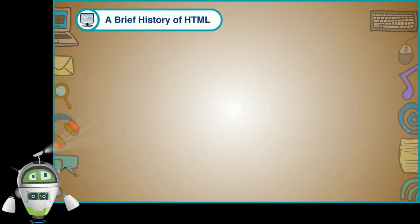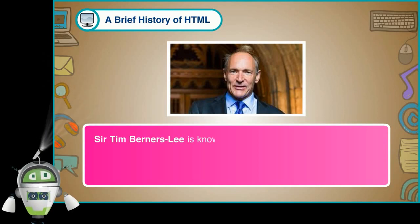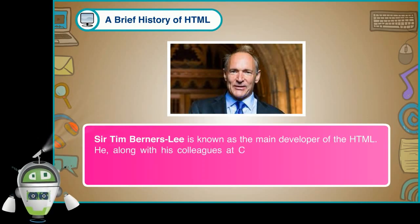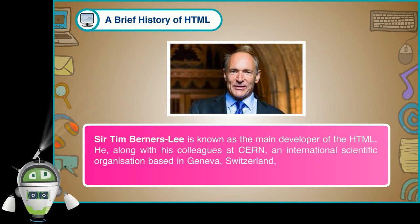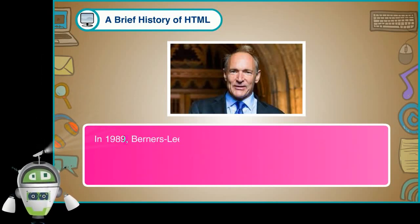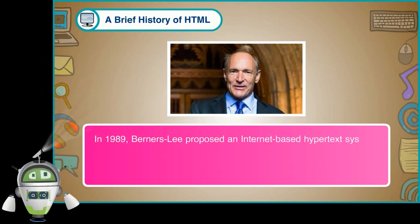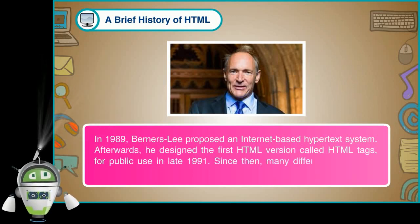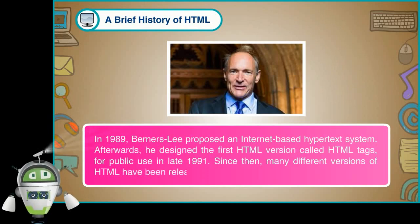A brief history of HTML: Sir Tim Berners-Lee is known as the main developer of HTML. He, along with his colleagues at CERN, an international scientific organization based in Geneva, Switzerland, developed a system for CERN researchers to use and share documents. In 1989, Berners-Lee proposed an internet-based hypertext system. Afterwards, he designed the first HTML version called HTML tags for public use in late 1991. Since then, many different versions of HTML have been released.